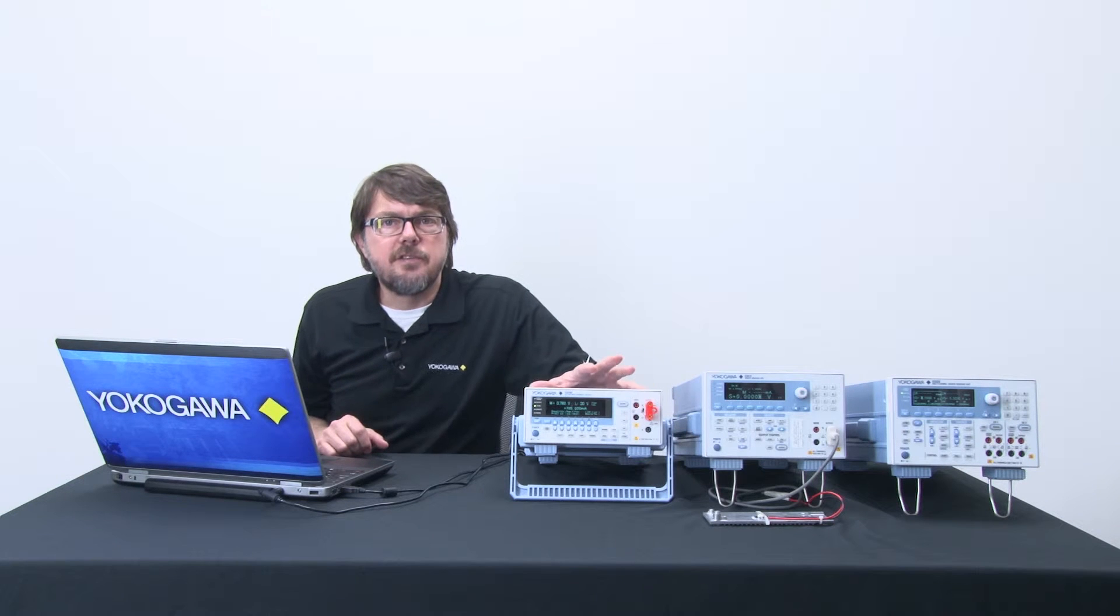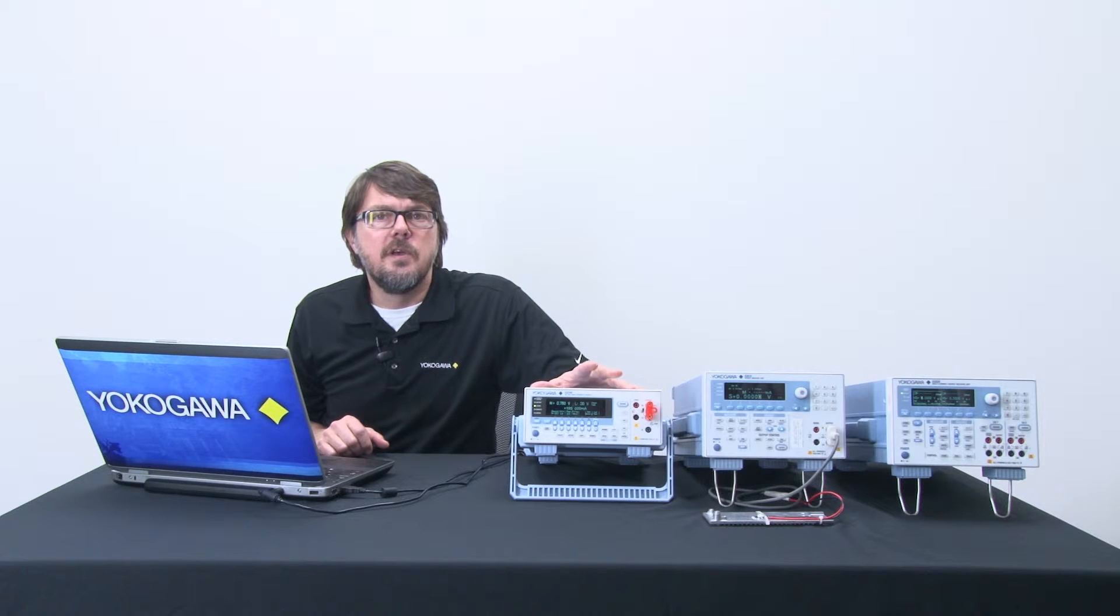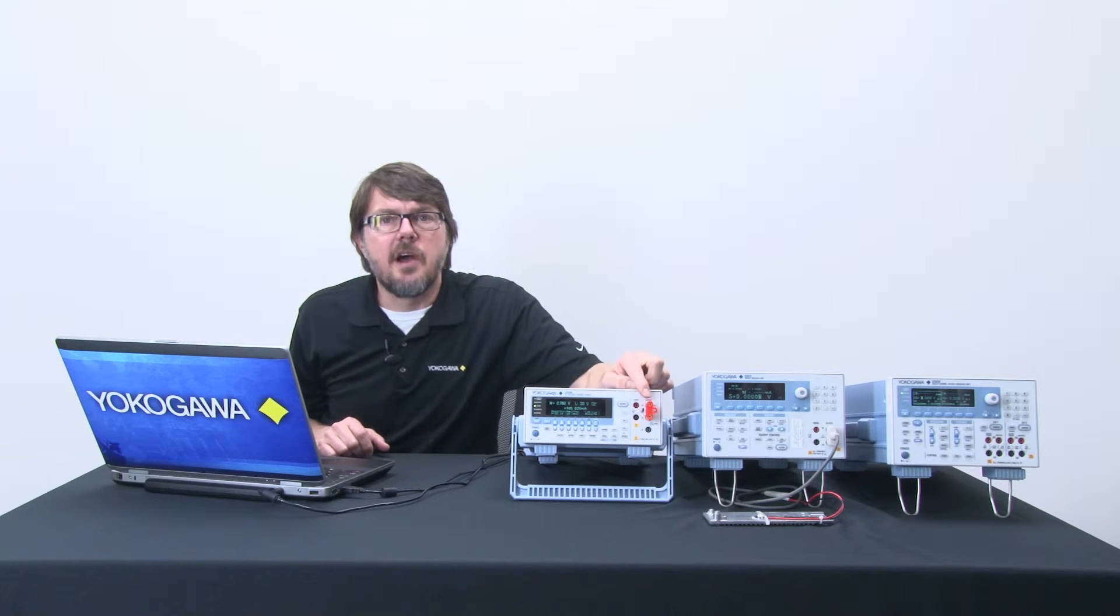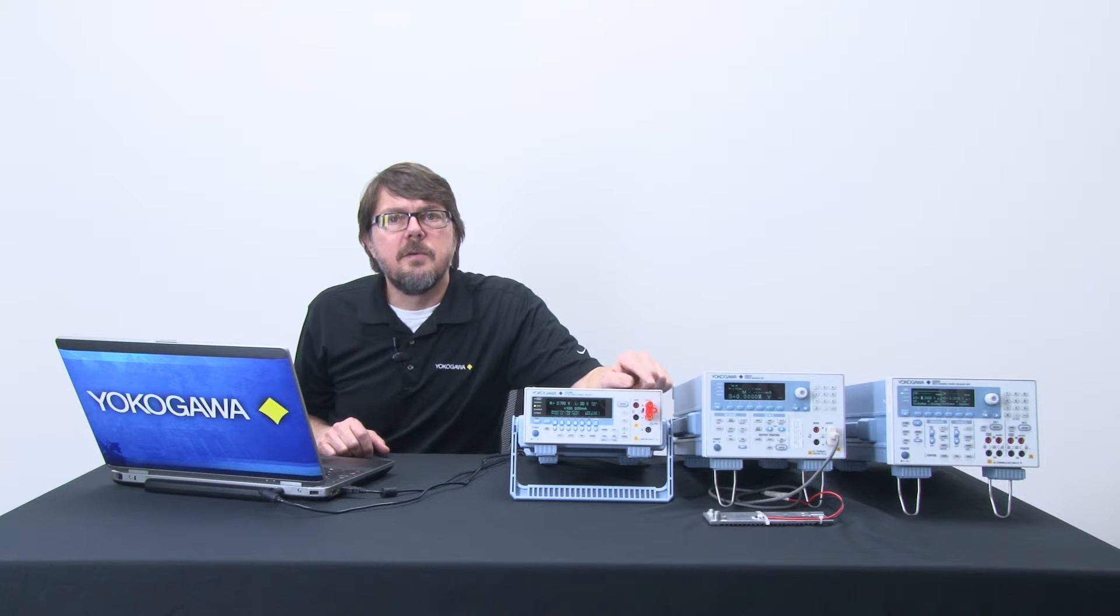Here I have the Yokogawa GS200 DC voltage and current source. It is good to 32 volts and 200 milliamps.